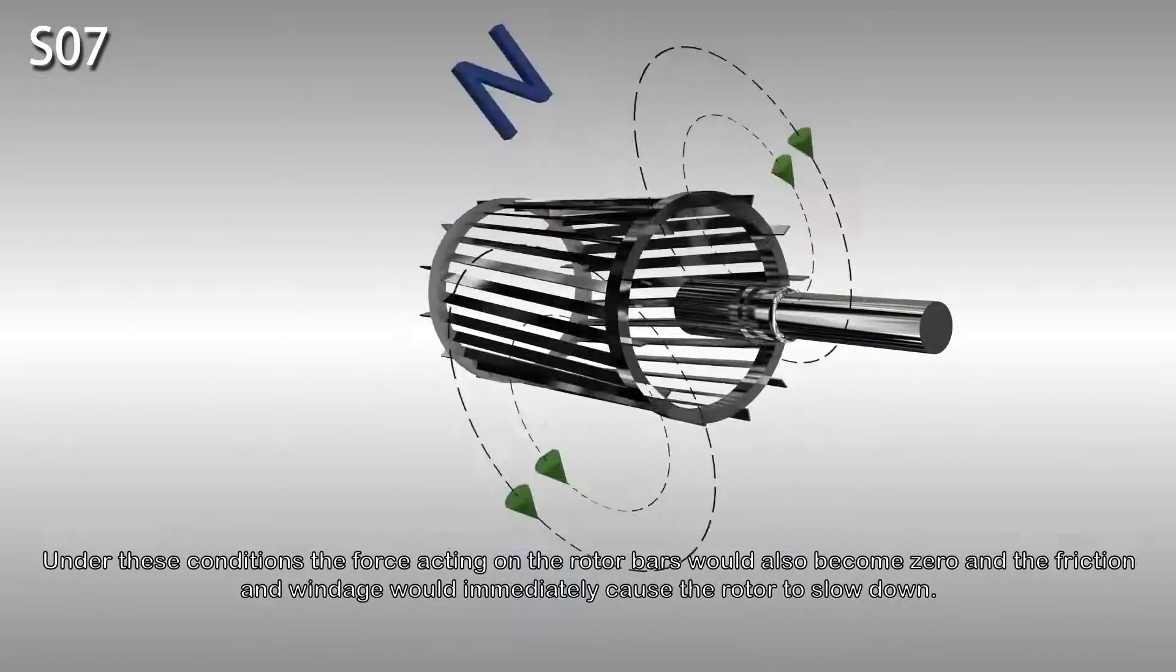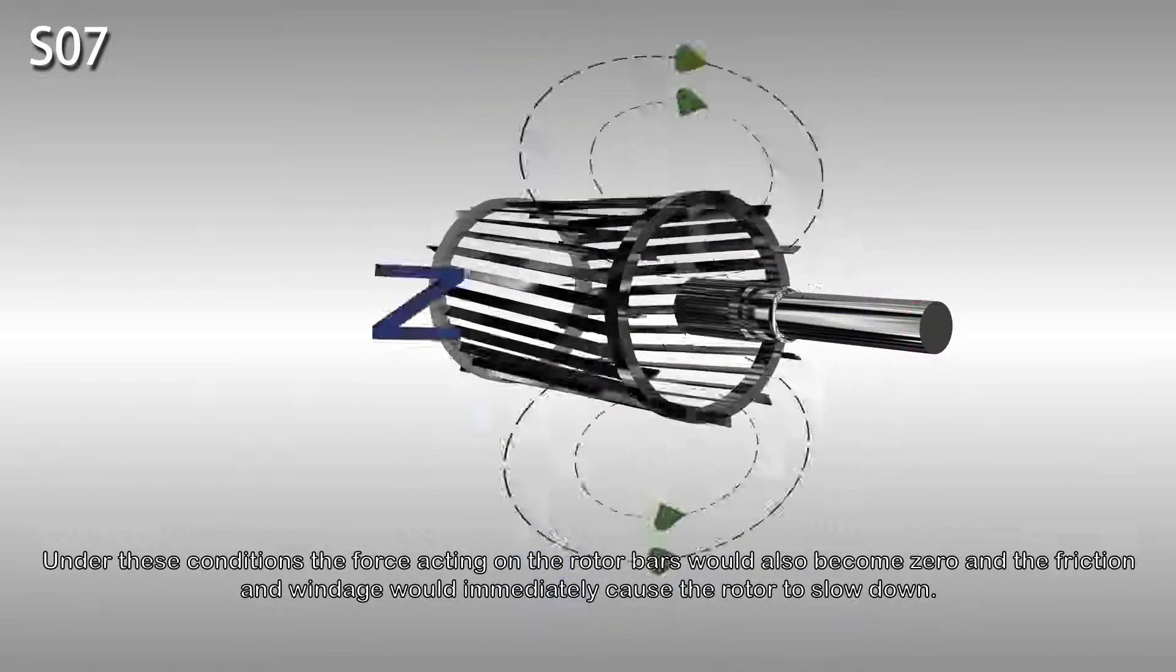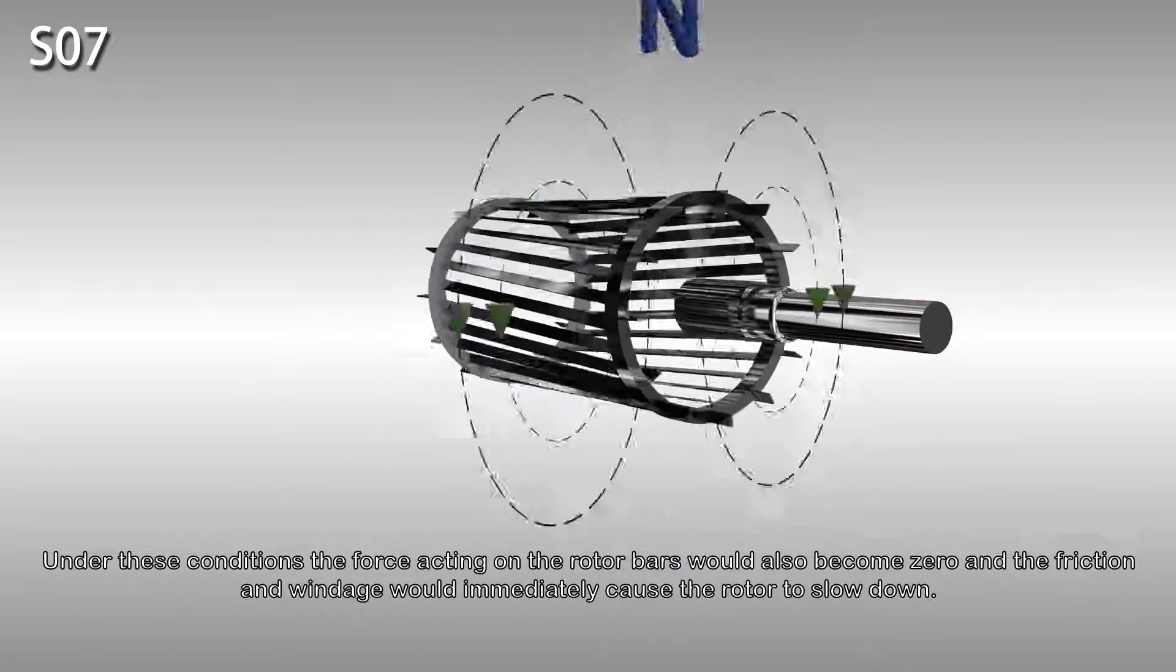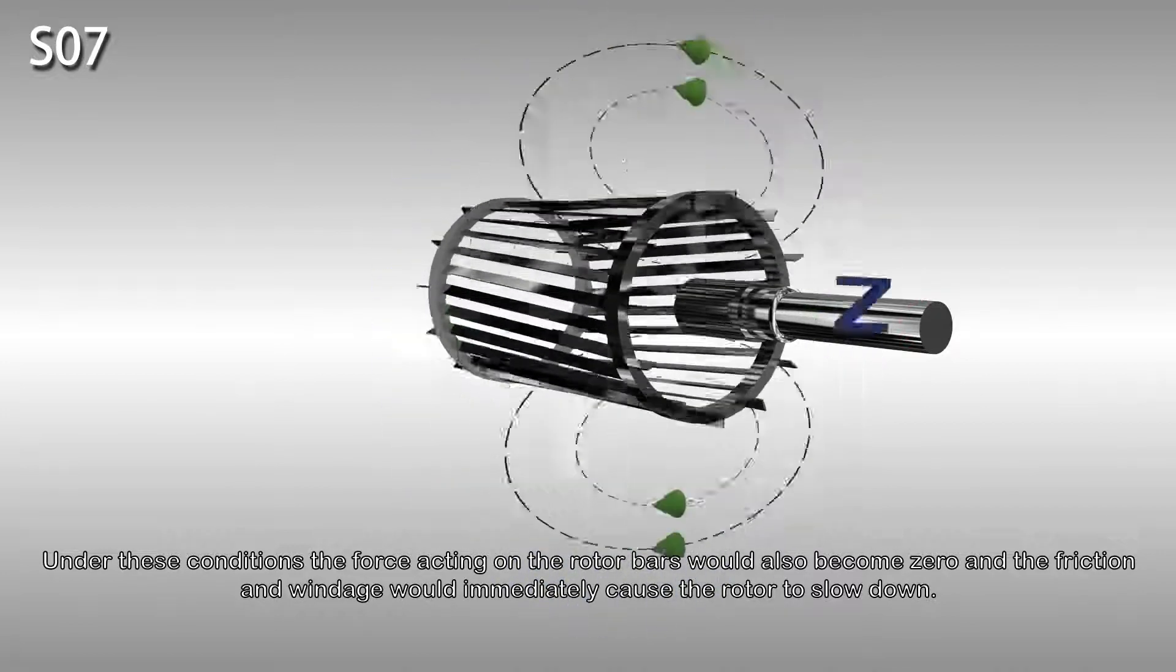Under these conditions, the force acting on the rotor bars would also become zero and friction and windage would immediately cause the rotor to slow down. The rotor speed is always slightly less than the synchronous speed in order to produce a current in the rotor bars sufficiently large enough to overcome the braking torque.